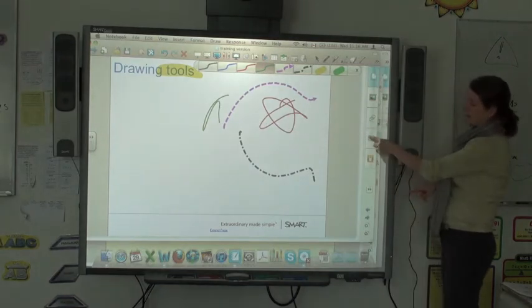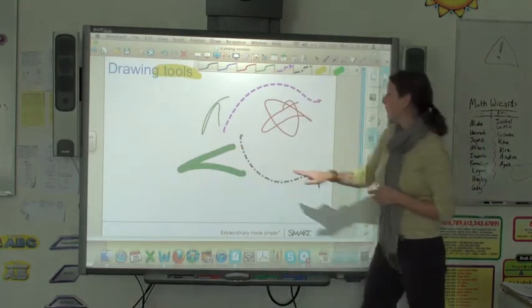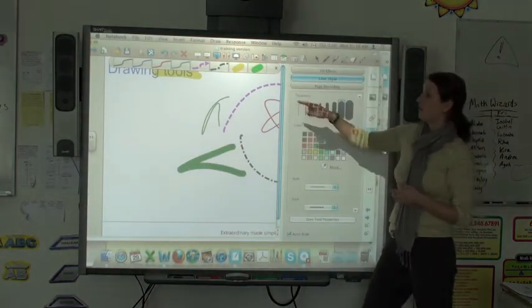If I use my properties tab here by clicking on that, I can make my line thicker so I can draw with a thick green line. I could also change the color of those lines.